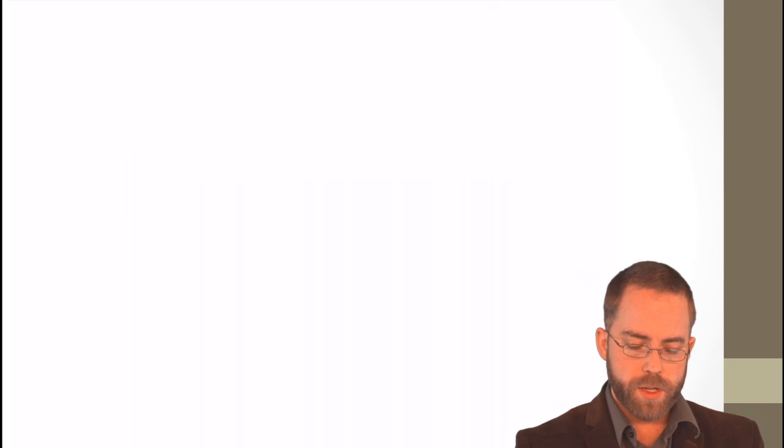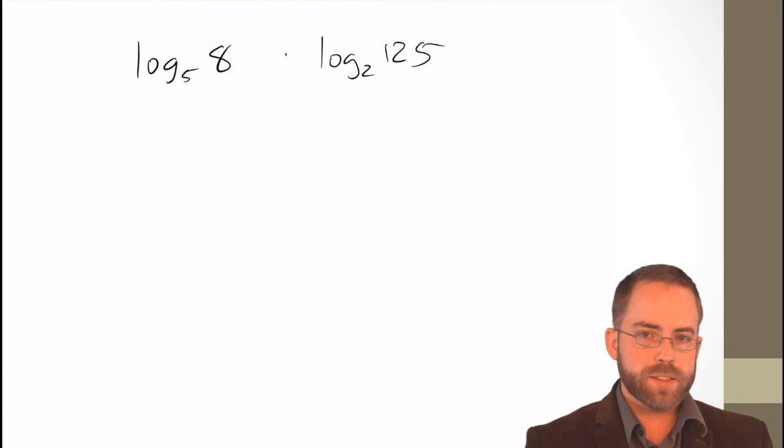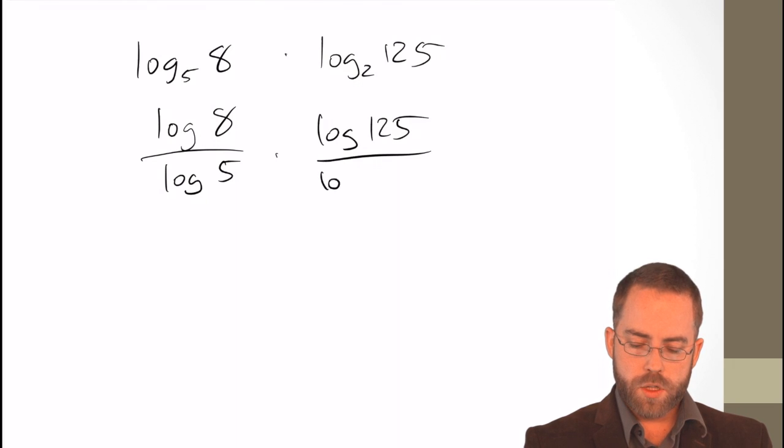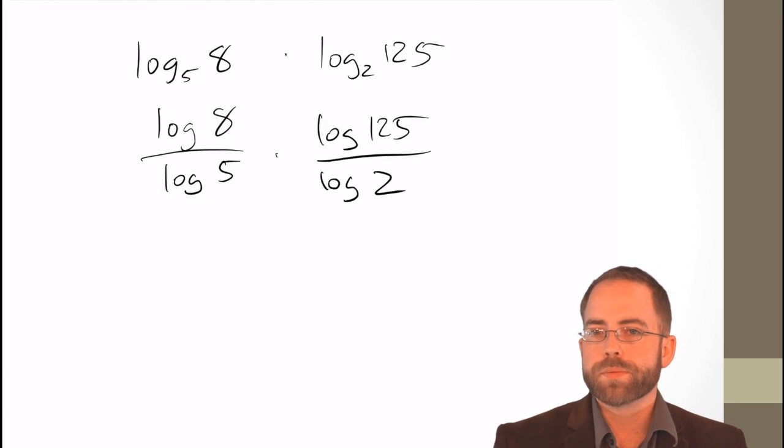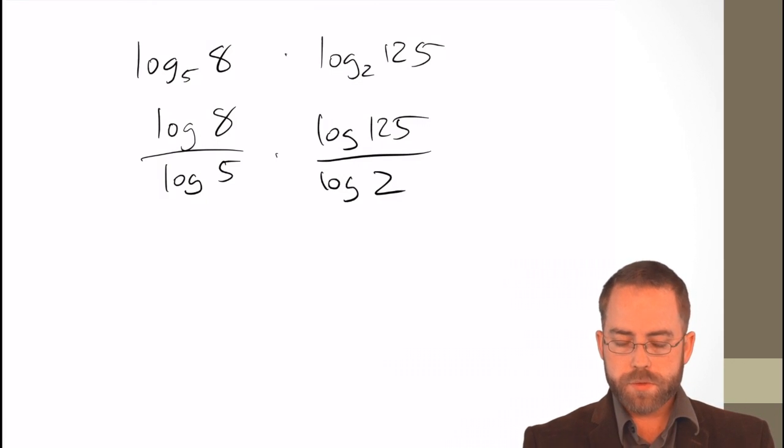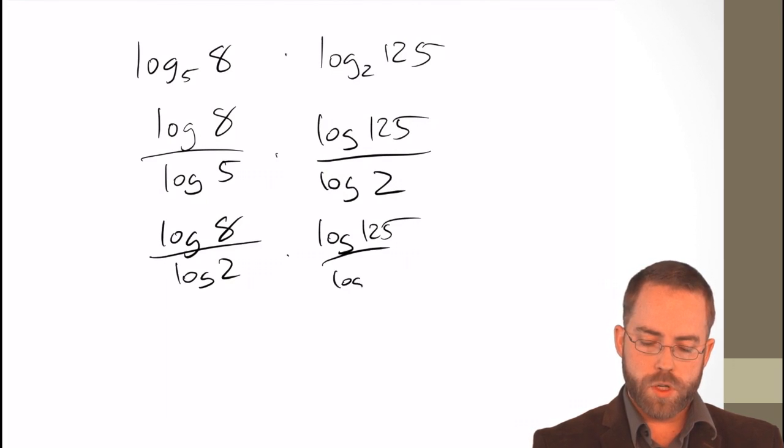Well, watch. If we rewrite, so let me write what we have. We have log base 5 of 8 times log base 2 of 125. That's nothing cool. So, let's change of base formula. Log base 10 of 8 over log base 10 of 5 times log base 10 of 125 over log base 10 of 2. Now I've got it in a form that I could put it in the calculator. But, if I do a little switchy-roo dance here of the denominators. If I rewrite this as log of 8 over log of 2 times log 125 over log 5.